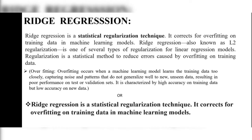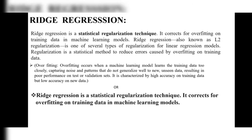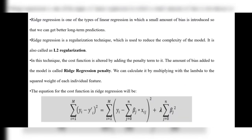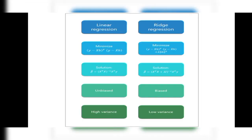Ridge regression is a statistical regularization technique that corrects for overfitting in machine learning models. Comparing linear regression and ridge regression: in linear regression the formula is (y − Xβ)ᵀ(y − Xβ), whereas in ridge regression we have (y − Xβ)ᵀ(y − Xβ) + λ‖β‖². Linear regression is unbiased while ridge regression is biased, following its regularization rules.